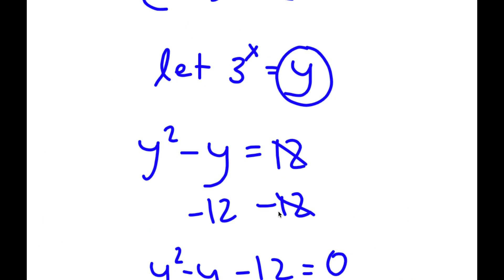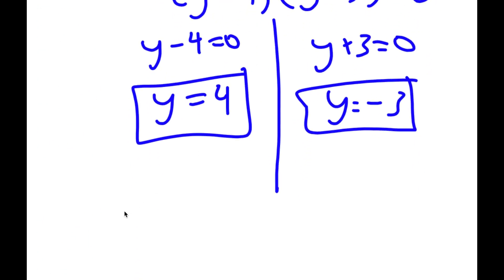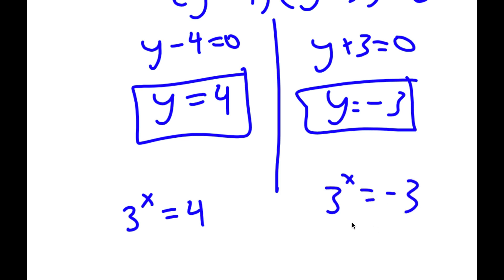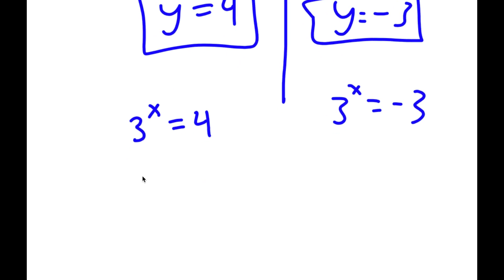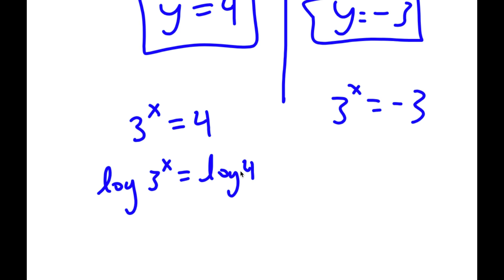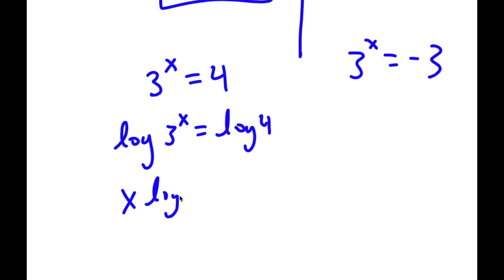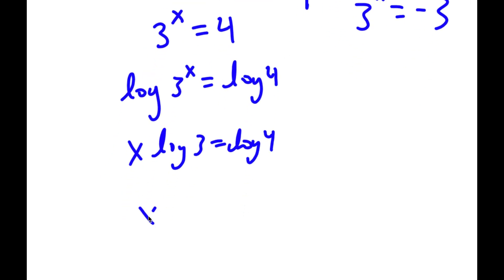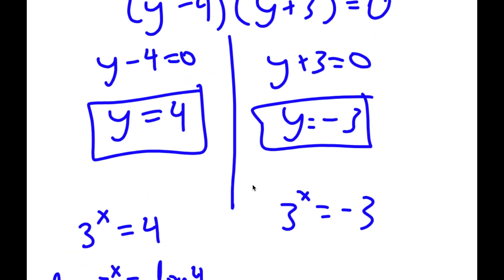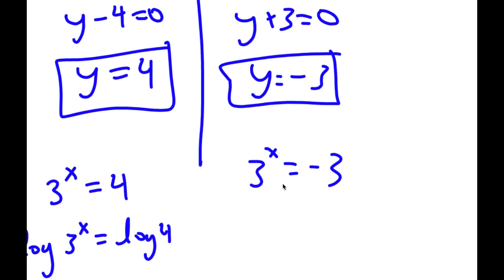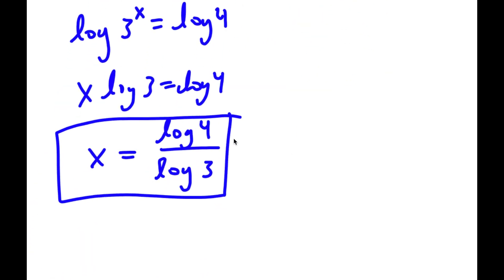Remember how we let 3 to the power of x equal to y. So now I have 3 to the power of x is equal to 4, and 3 to the power of x is equal to negative 3. For 3 to the power of x equals 4, I take the log on both sides and get x times log 3 is equal to log 4, meaning x is equal to log 4 over log 3. For 3 to the power of x equals negative 3, you can't take a power of a positive number and make it negative, so there's no solution. My only solution is log 4 over log 3.